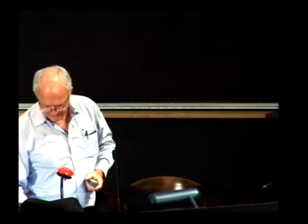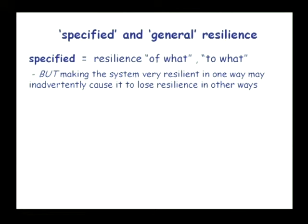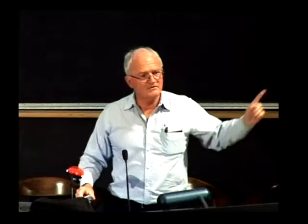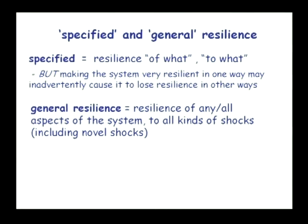Moving on to specified and general resilience: specified resilience is the resilience of something to something, and that's mostly what we think about when talking about thresholds. But making the system very resilient in one way can inadvertently cause it to be less resilient in other ways. There's theory from the Santa Fe Institute HOT model — highly optimized tolerance — which says the more robust you make a system in one way, necessarily the less robust it becomes in others, because robustness is a conserved property. By structuring the system to be very resilient one way, you could expose it in many other ways. Therefore you also have to think about maintaining general resilience — the resilience of any or all aspects of the system to any kind of shock, including new novel shocks.